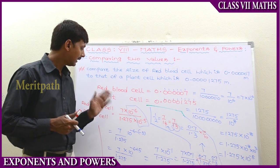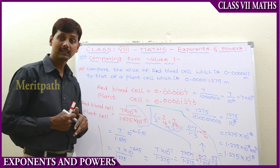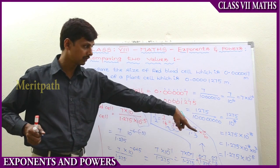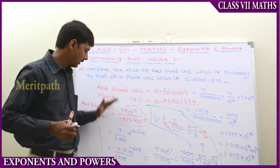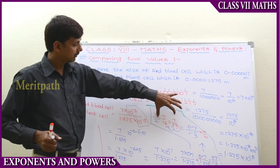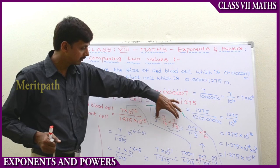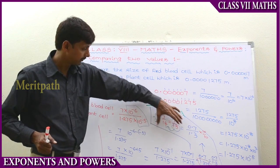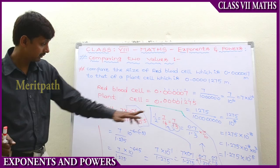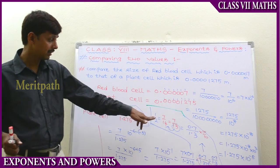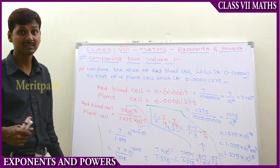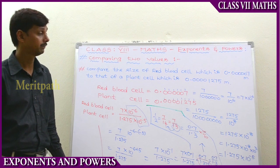So when we compare these two numbers, we get 1 by 2. The red blood cell and plant cell are in the ratio of 1 to 2. We solved the first part, then simplified the second part, and finally arrived at the comparison of the red blood cell and plant cell.